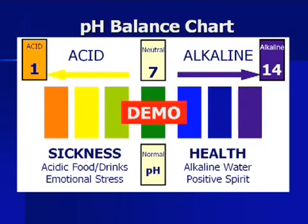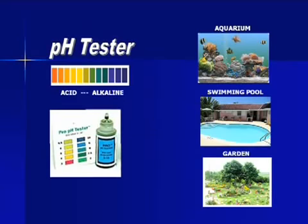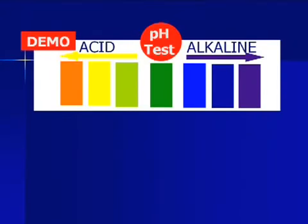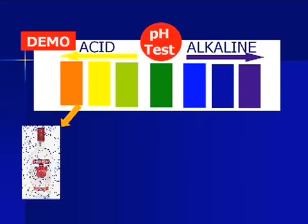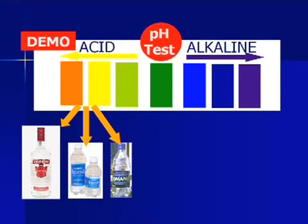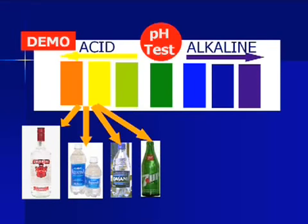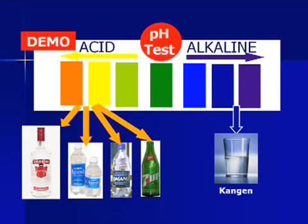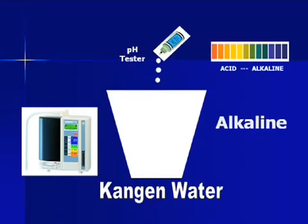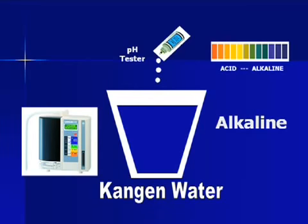Now I want to do a demonstration showing that many of what we drink are acidic. This is a pH tester used to test the acidity or alkalinity of aquarium, swimming pool, and garden water. We also use it to test different liquids. If we test Smirnoff vodka, Aquafina, Sunny bottled water, and 7Up, we can see that they are acidic. The same test shows that Kangen Water is alkaline — this is what we should be drinking every day. When you drop the pH tester, Kangen Water turns blue, which means it is alkaline.